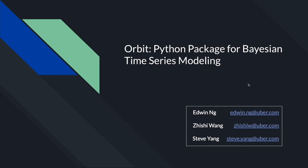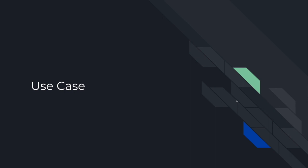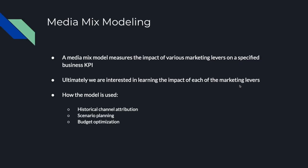I want to outline some use cases here. One of those is a media mix model. A media mix model measures the impact of various marketing levers on some specified business KPI. For example, to make this more concrete, let's say new user signups is the KPI we want to measure. We can think of those signups as a function of a bunch of marketing levers, control factors, and as a function of signups throughout time historically.